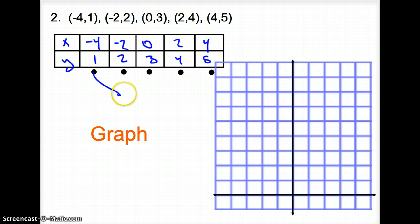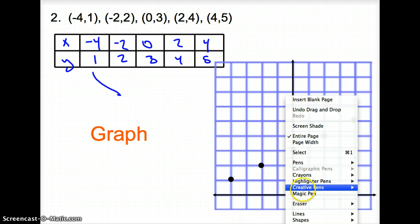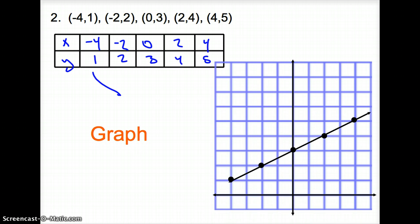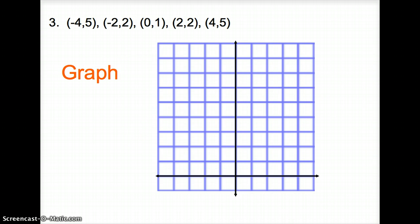We have negative 4 1. So we go over negative 4, up 1, over negative 2, up 2, over none, up 3, over to the right 2, up 4, and then over to the right 4, up 5. And if we plot our points correctly, notice what shape that we get. We get a beautiful line as we connect the dots. And so what graph gives us a line? That is a linear function, gives us a line.